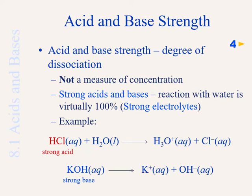When we studied electrolytes, we classified strong acids as strong electrolytes and showed how those acids, when dissolved in water, completely dissociate to make strong electrolytes. Similarly, we classified compounds as strong bases if they completely dissociated, showing complete dissociation by writing a right-pointing arrow — virtually all of it dissociates to give you the components on the right.